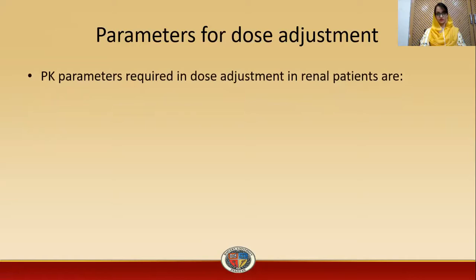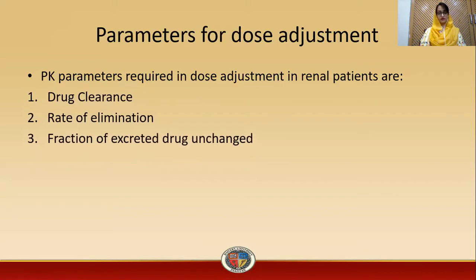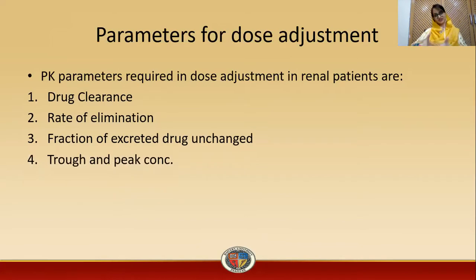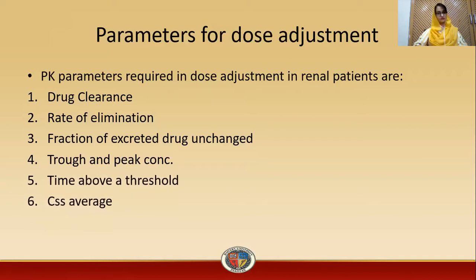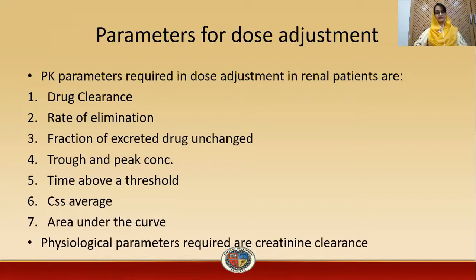Pharmacokinetic parameters required for dose adjustment in renal patients include drug clearance, rate of elimination, fraction of excreted drug unchanged, trough and peak concentration, time above a threshold, average concentration at steady state (CSS average), and area under the curve. The physiological parameter required is creatinine clearance.